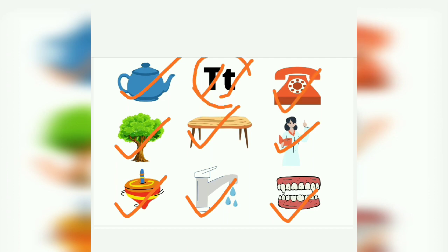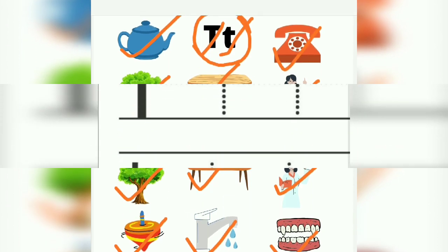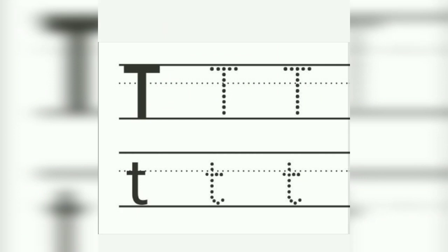This is our letter T. Now we will learn how to trace letter T. Keep your pencil, we will trace from up to down, left to right. T. Keep your pencil at the top, come down from up to down, left to right. This is our letter T.